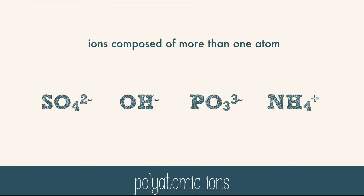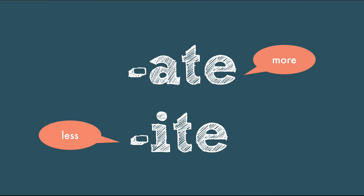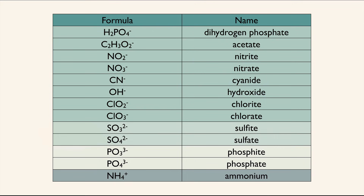Most of the polyatomic ion names end in -ate or -ite, which are the oxyanions, but some polyatomic ions end in -ide. The -ite ending means fewer oxygen atoms and -ate means more, which is in reference to the number of oxygen atoms in the ion. Let's look at a list of some common polyatomic ion names — here they're sorted by their charge. The top section are all −1 anions, then the charge increases down the chart. Everything on this chart is an anion except for one cation: the ammonium ion, NH4+.